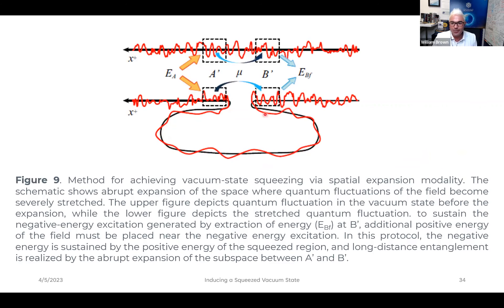It has to do with inducing a squeezed vacuum state, which is a very interesting methodology that produces this abrupt expansion of the space where quantum fluctuations of the field become severely stretched. And in this way he can kind of chain the quantum entanglement over much larger distances, the strength of the spatial correlation over much longer distances.